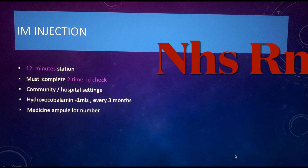It's a community setting most of the time, so be prepared for both community and hospital settings. There is a little difference in ID checks and explanations between the two. Most of the time in IM injection you will get hydroxocobalamin, which is 1ml and needs to be given every three months. Ask the patient when they had the last dose, and for the medicine ampoule, you need to write the slot number.